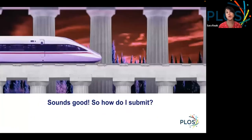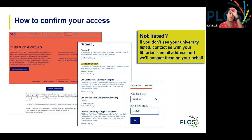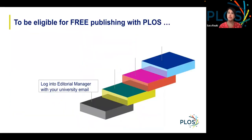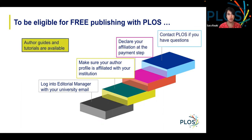Assuming that's all appealing and you want to submit with PLOS, the question becomes how. The first thing you need to do is confirm that your institution has a relationship with PLOS, and you can do this on our website on the institutional partner page. You'll search either for your institution or by country. Underneath the institution name are the journals eligible for publishing with no fees. If you don't see your university listed, you can contact us or your library. To be eligible for publishing with PLOS, your first step is to log into Editorial Manager, our submissions platform for all of our journals. Make sure your author profile is correctly affiliated with your institution, and when you get to the payment step, declare your affiliation again.